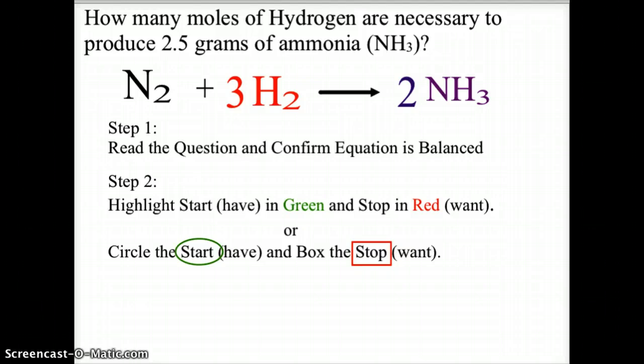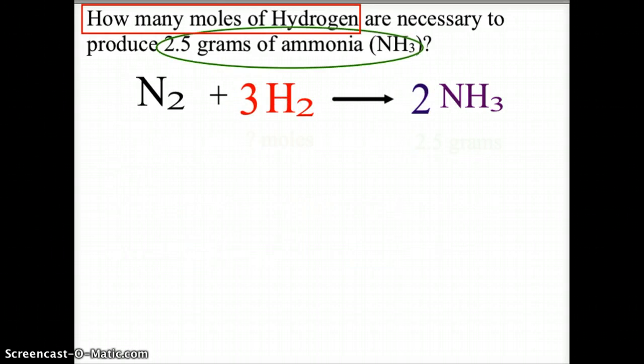I'm going to start by highlighting my givens and what I'm trying to look for. So I'm going to use green and circle my starting point, which is the thing I have, and I'm going to use red to box the stopping point, which is the thing I want. So when we read the equation it says how many moles of hydrogen, so we are looking for that. That is what we want to find, so I'm going to box that in red. And we are going to start with 2.5 grams of ammonia, so I circle that in green. So the 2.5 grams of ammonia is our starting point.